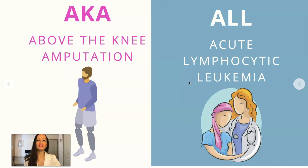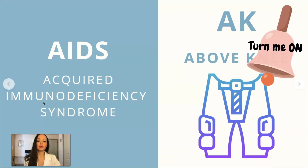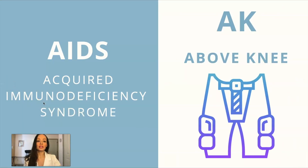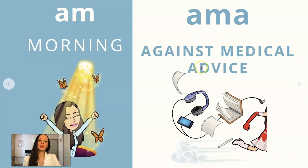ALL is the most common kind of childhood cancer — it is predominantly found in children. AIDS is acquired immunodeficiency syndrome. AK is above the knee. AM is morning. AMA is against medical advice. You may see these all in caps or all in lowercase — the capitalization doesn't really change the abbreviation, so don't get thrown off if something isn't in all capitals.